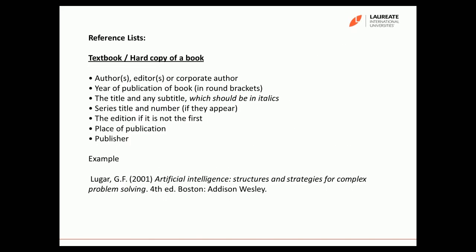The first example shows how you would compile a reference from a normal textbook or hard copy book. First, you put the author's name — or a corporate author, or editor if that's the only information available. Then the year of publication in round brackets, then the title and any subtitle in italics, the edition if it's not the first edition, the place it was published, and the publisher. For example: Luger GF (2001), then the book title in italics, the edition number, Boston, Addison Wesley.